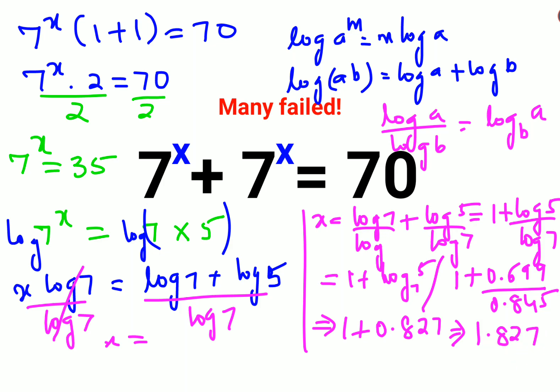So let me clearly mark and circle the answers. This is one answer. Another is this answer. And the last answer is this one. So these are the three values of x which you can write.